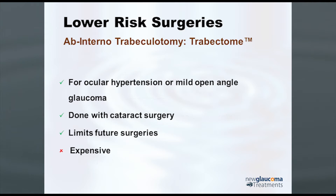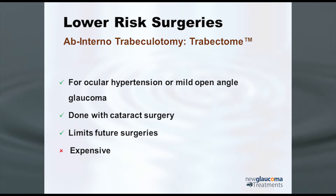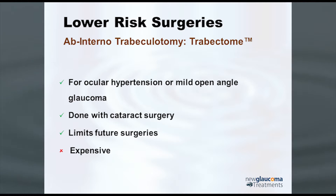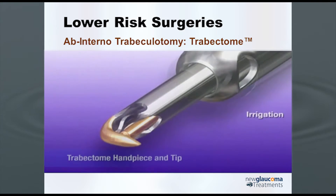You can get more sophisticated and a whole lot more expensive. Ab internal trabeculotomy has been done using a device called a trabectome, which has to be done with or after cataract surgery. As with all of the trabeculotomies, they do limit the potential for future canal-based surgeries. The biggest issue with trabectome is it's just darn expensive.